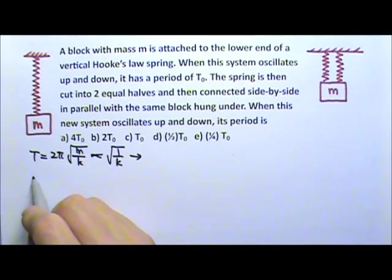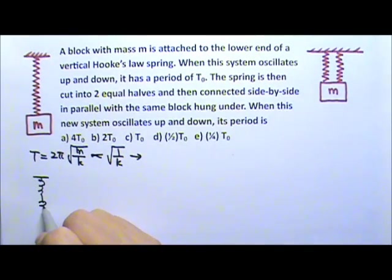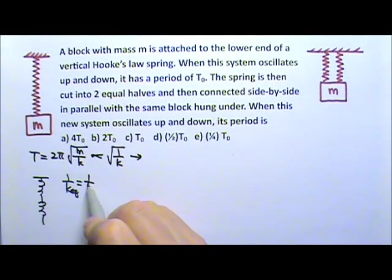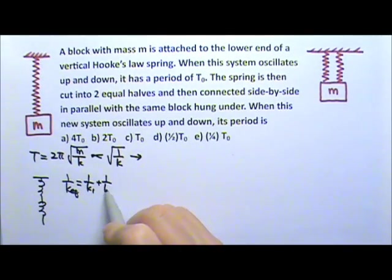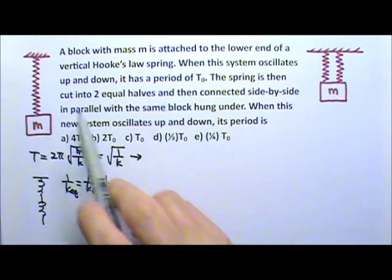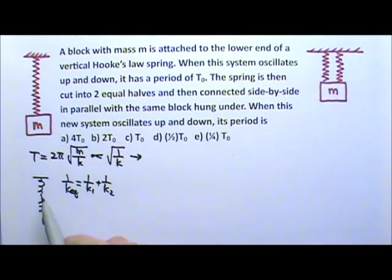When two springs are connected in series, the equivalent spring constant can be found by using this equation: 1/K_eq = 1/K1 + 1/K2. If I put these two halves back together, these two are identical halves.